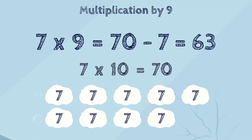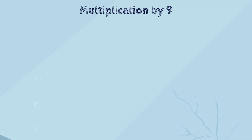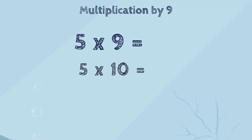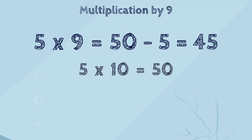So, seven times nine is sixty-three. Let's summarize this trick: to multiply a number by nine, you can multiply it by ten and then subtract the number that you are multiplying by nine. Let's try several more examples. What is five multiplied by nine? Five times nine is five times ten minus five. Five times ten is fifty. Fifty minus five is forty-five. So, five multiplied by nine is forty-five.